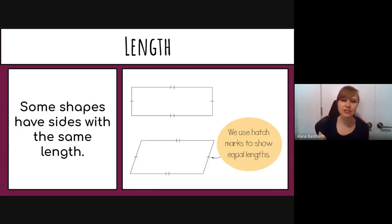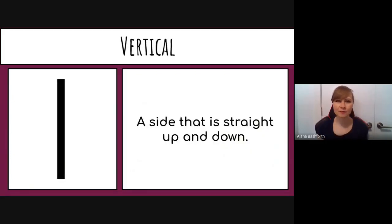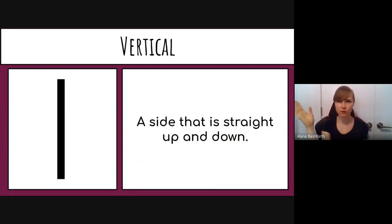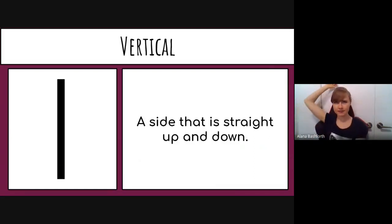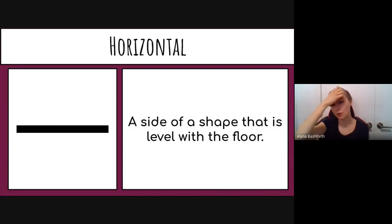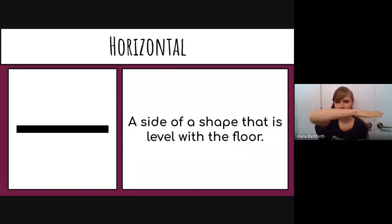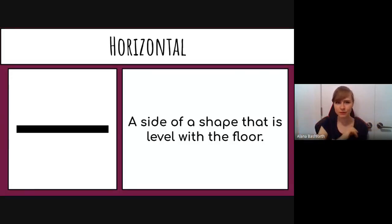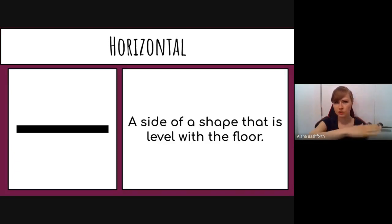Vertical means straight up and down — not tilted one way or the other, but exactly straight up and down, like a wall. Horizontal means the opposite: going exactly across, level with the floor, not tilted. Anything tilted would be diagonal.